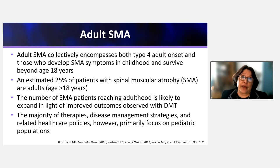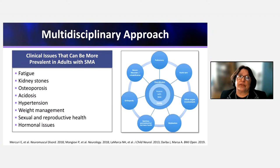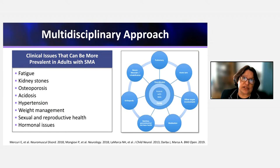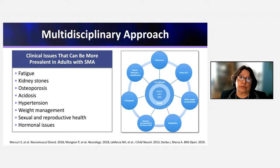SMA has been considered a primarily pediatric disorder, with the majority of therapies, disease management strategies, and related healthcare policies targeted to the pediatric population. But the multidisciplinary approach used in neuromuscular clinics is very important for providing comprehensive care. The clinical issues prevalent in adults with SMA differ significantly from those in pediatric SMA.